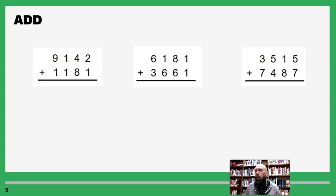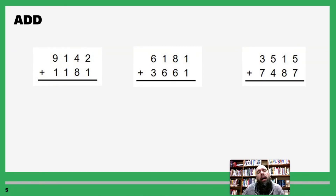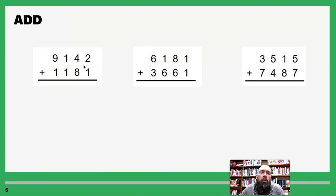Let's add more digits now. All this does is give us more stuff to do — it doesn't make it difficult or worse, it just means we have to add a little bit more. So let's start with 9,142 plus 1,181.